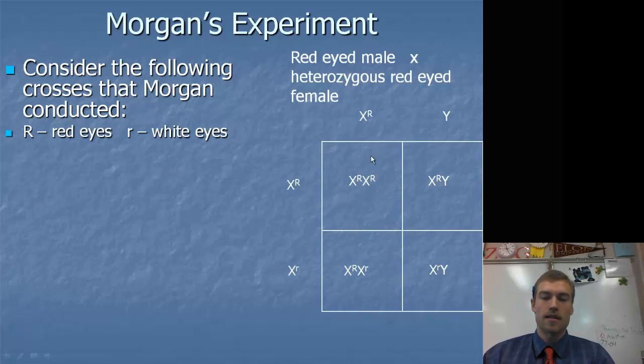You notice that the females are getting two copies of the R, whereas the males are only getting one copy. Which means that the females are going to have the red eyes as opposed to white even though they are heterozygous. However the male, since it only gets one, if it gets the recessive trait then it is absolutely going to have that trait.